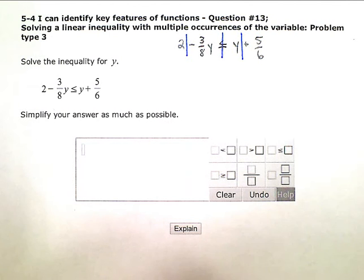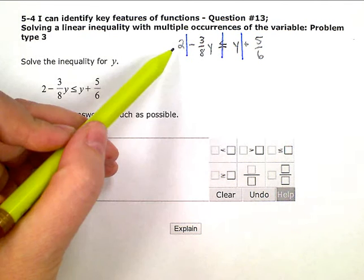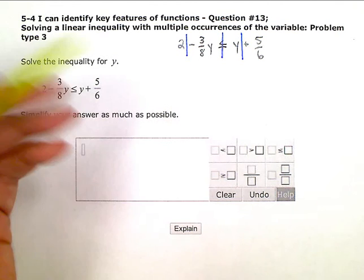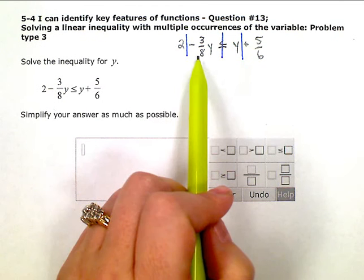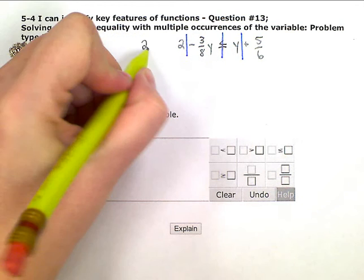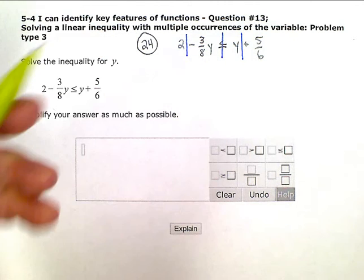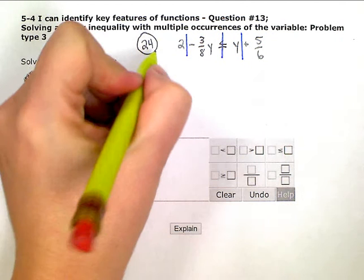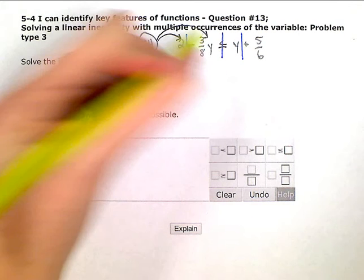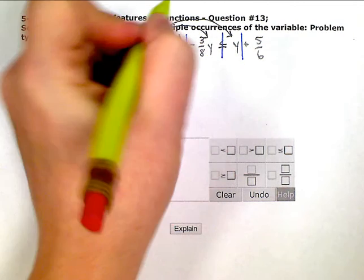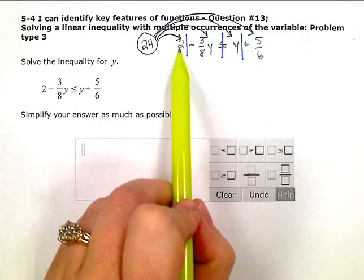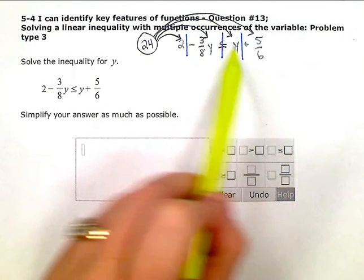So I'm going to use 24, and I need to take that 24, and I'm going to multiply every term. That's why I put the purple lines in. So 24 times this term, 24 times this term, 24 times this one, and 24 times that one.